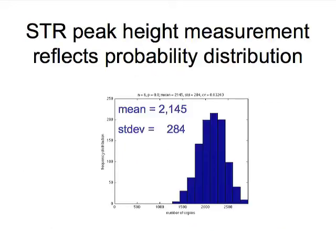This tells us that an STR peak height measurement reflects an underlying probability distribution. You can't expect to get the exact same answer under the same experimental conditions every time. By computer simulation, run several thousand times, we can sample from this probability distribution and reconstruct what the number of copies, which would translate into the height of a measured peak, would be. And we see a probability distribution. Here, it has a mean value of about 2,000 and a standard deviation of 280.